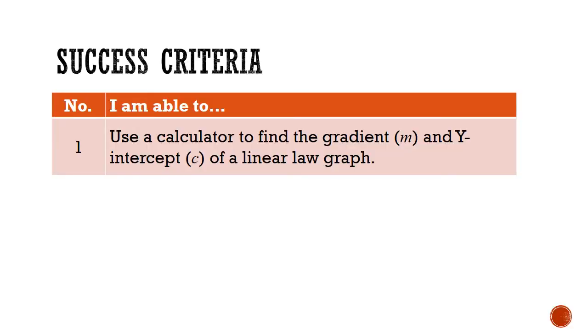So what does the success criteria for cheating look like? Well, it's just to be able to use a calculator to find the gradient (m) and the y-intercept (c) of a Linear Law graph without actually drawing the graph.